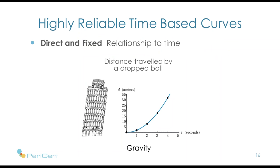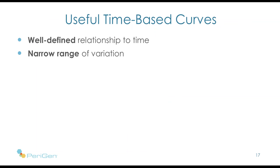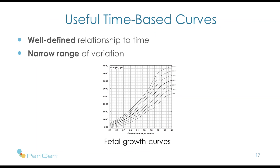In biology, time and our processes generally aren't so precise. But we can still have useful time curves where there's a well-defined relationship between the process of interest and time, and where there is a relatively narrow variation. Here is a set of curves very familiar to this audience: fetal growth curves. At any gestational age, we can have a very good idea of the expected weight of a fetus, plus or minus a reasonable range, and falling outside that range is actually quite helpful in determining abnormalities of growth.